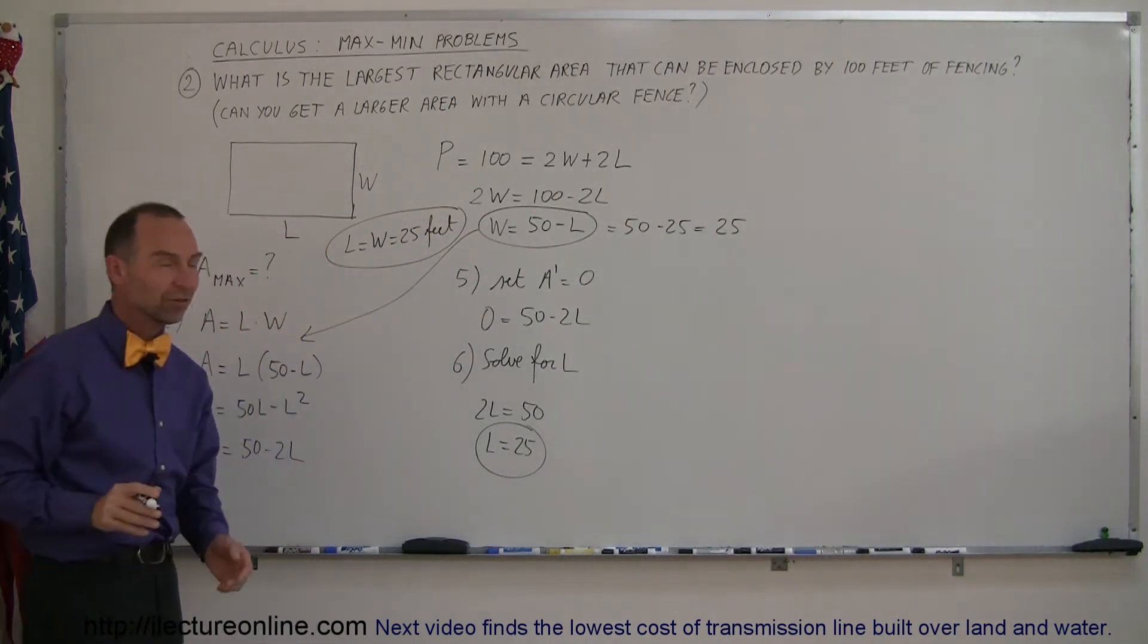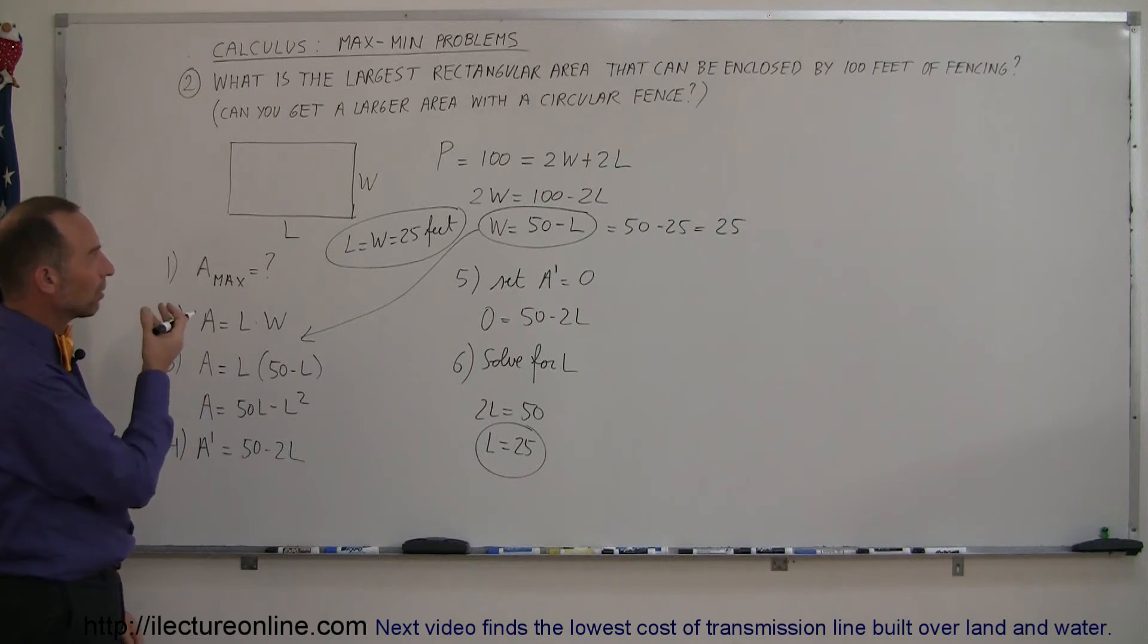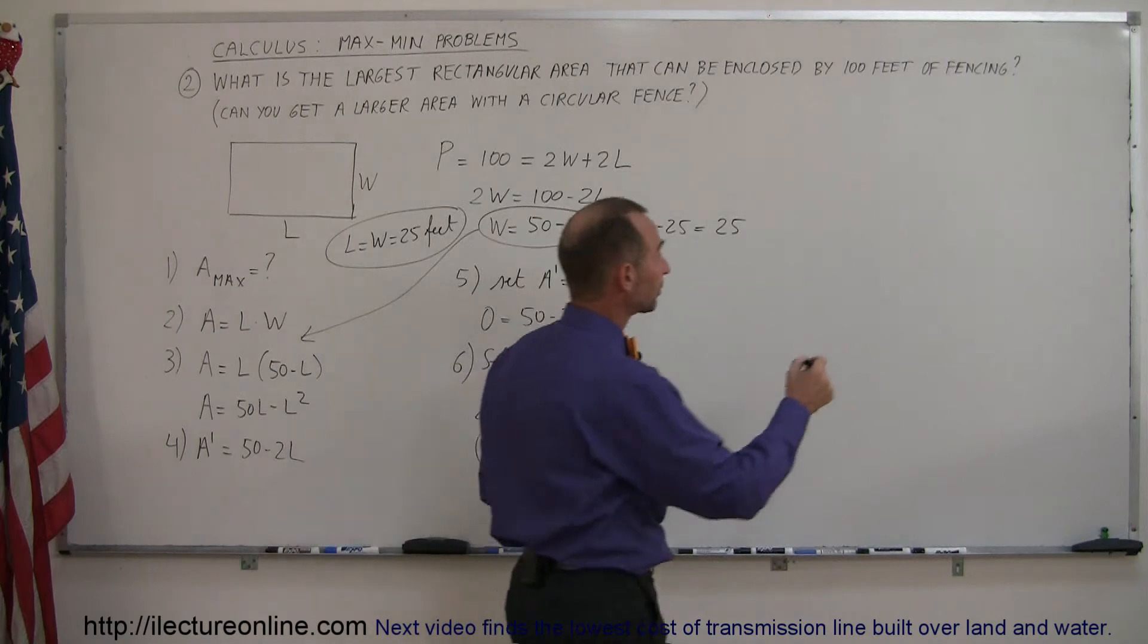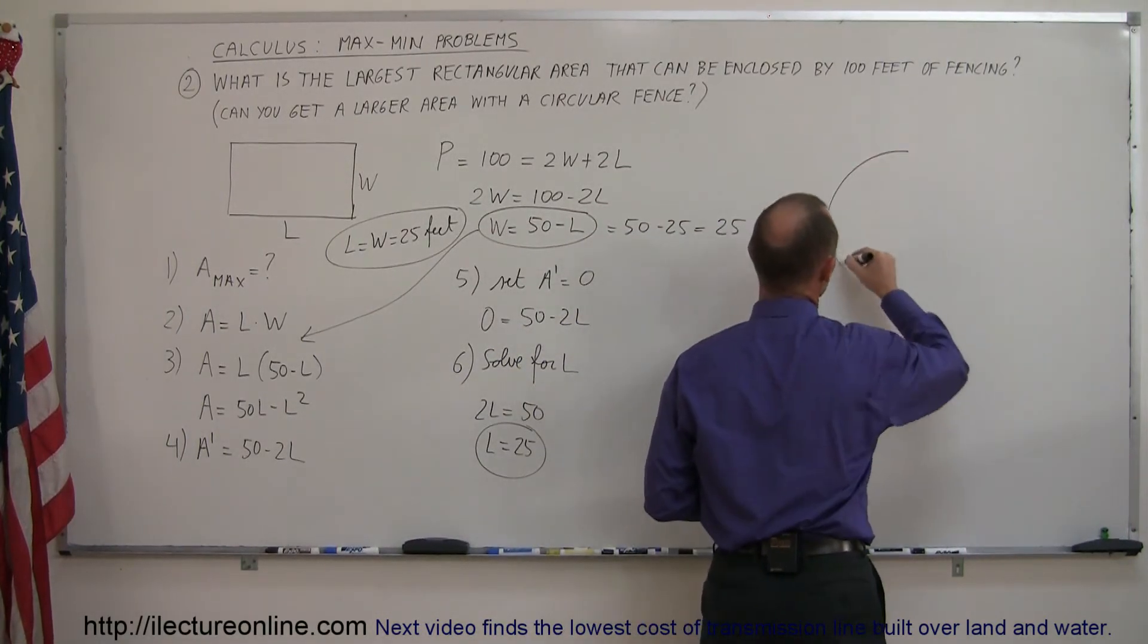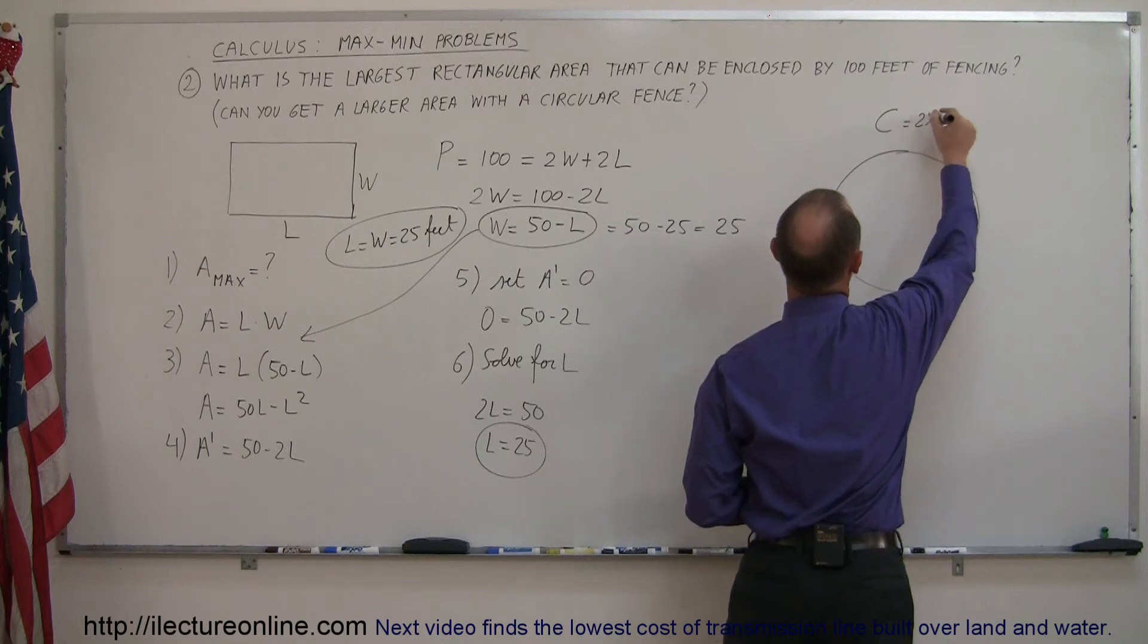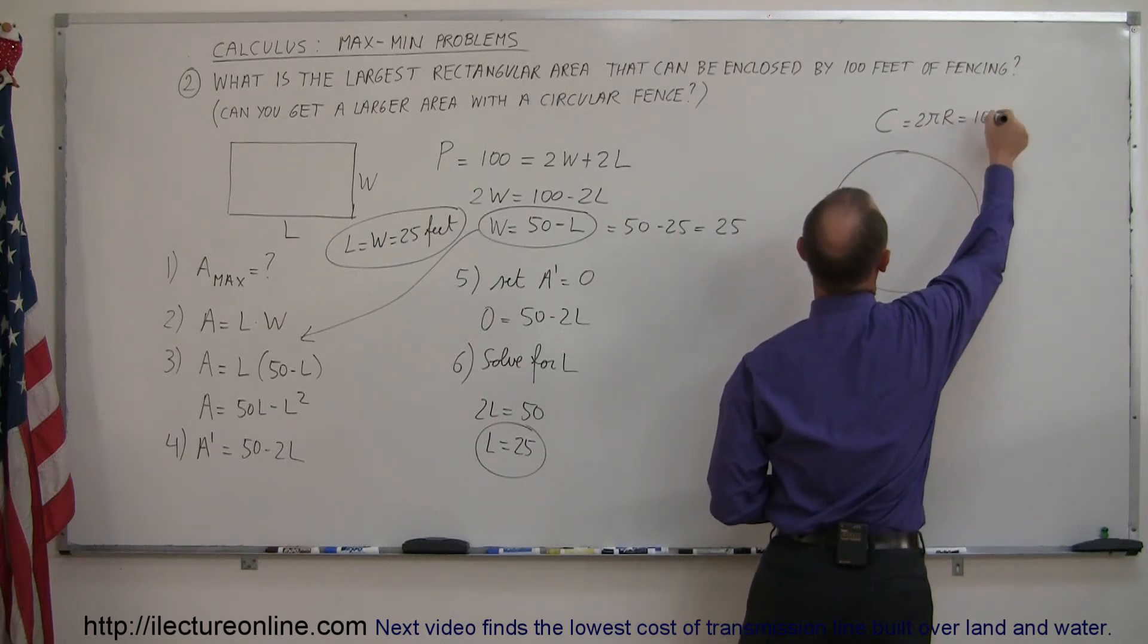Now just out of interest, would you get a larger area if you took a hundred feet of fencing and made it into a circle? Well, let's find out. If you make it into a circle, then you know the circumference, which is equal to 2 pi r, which would be a hundred feet.